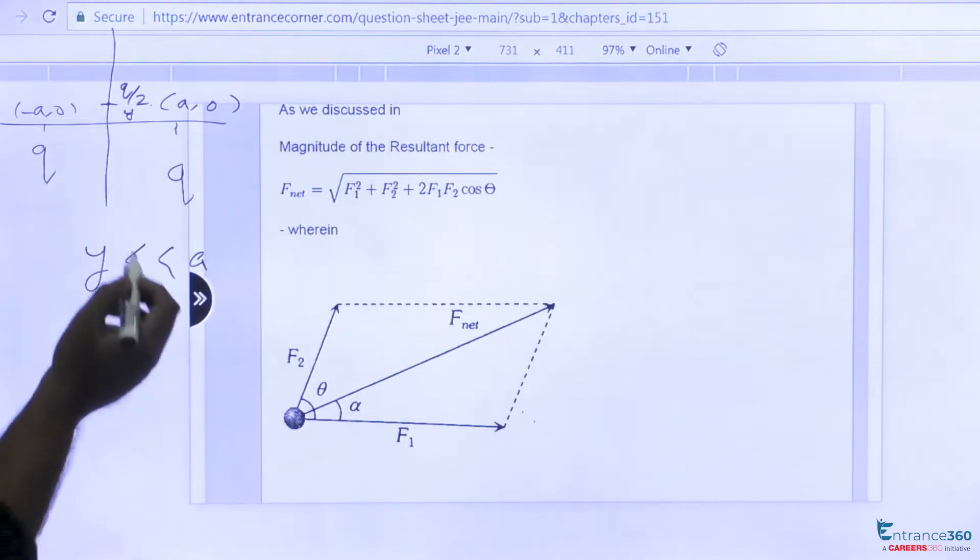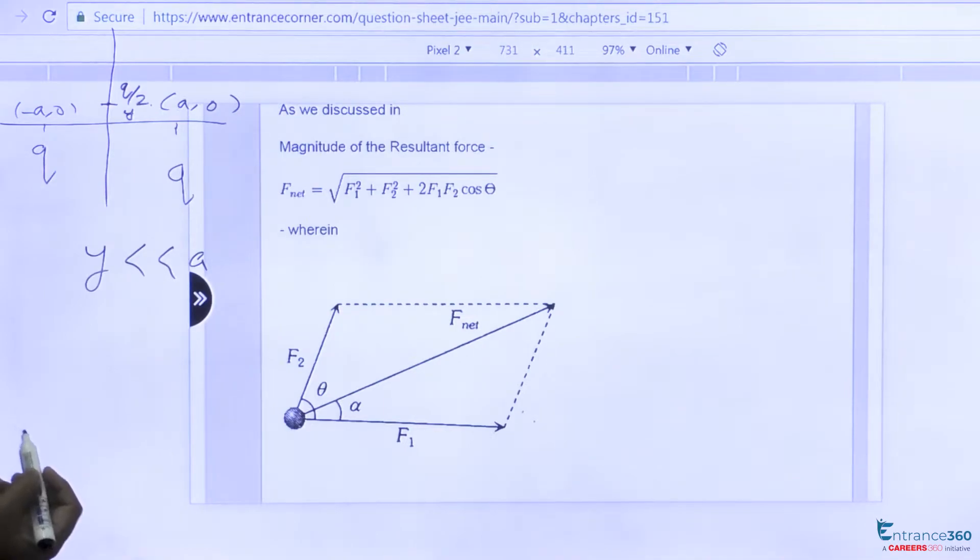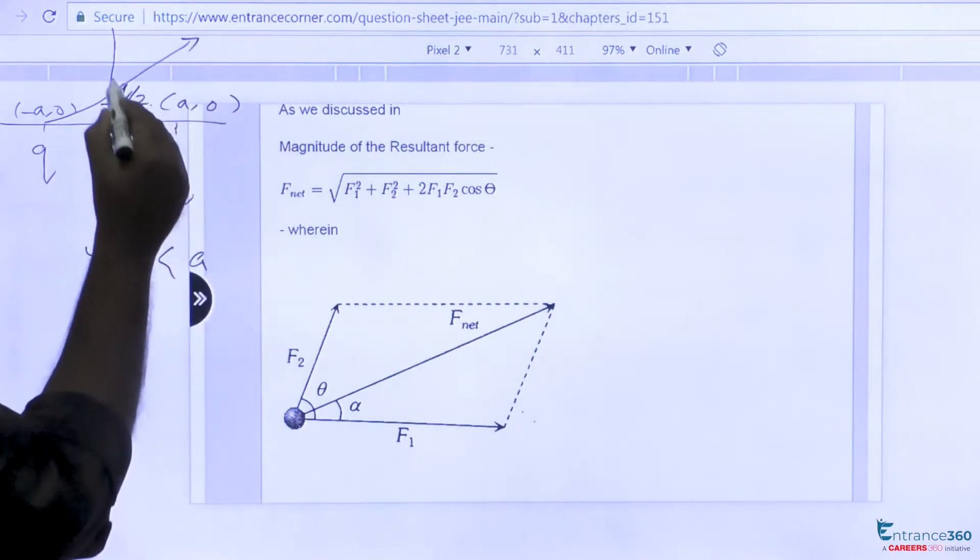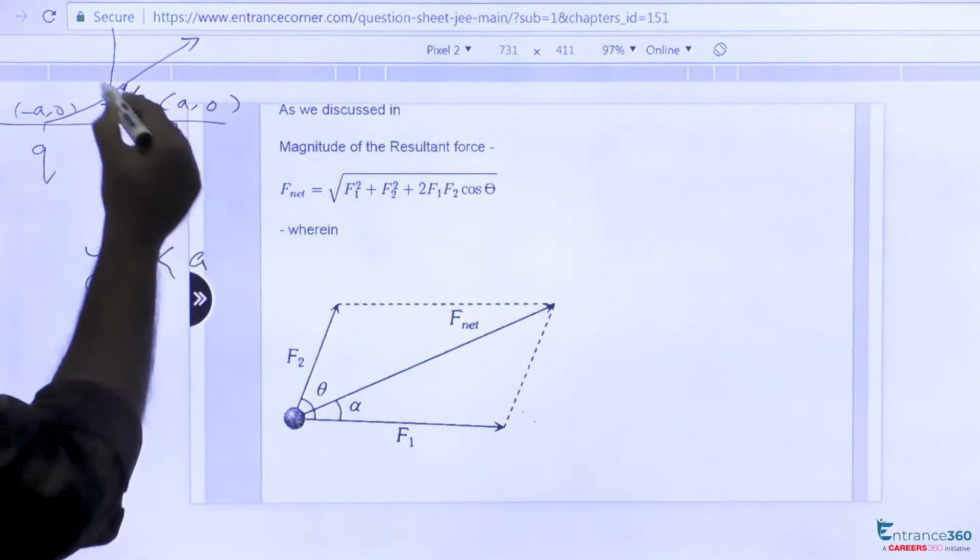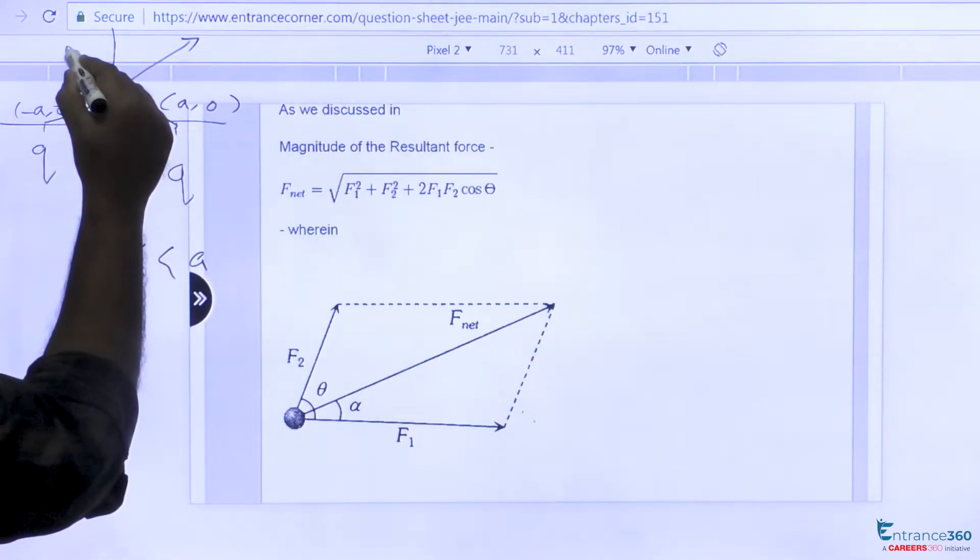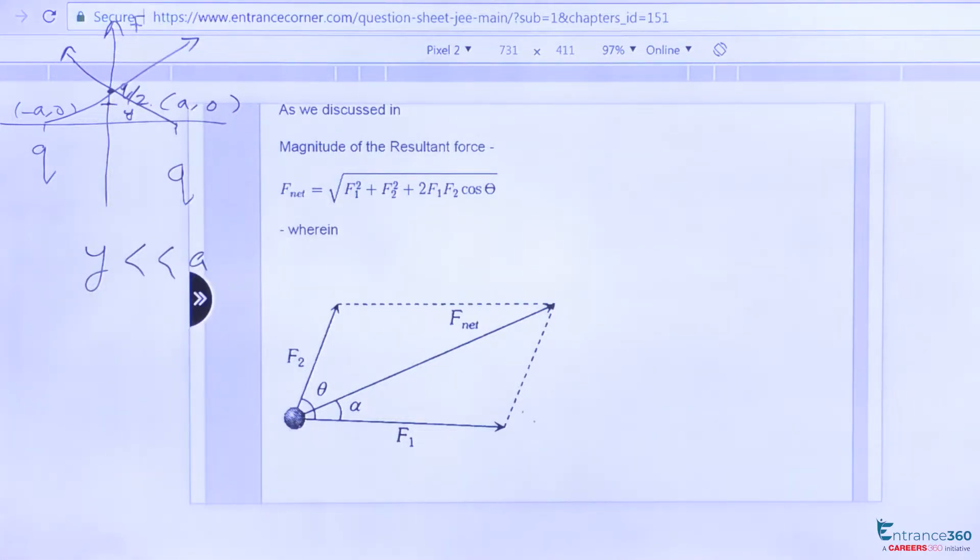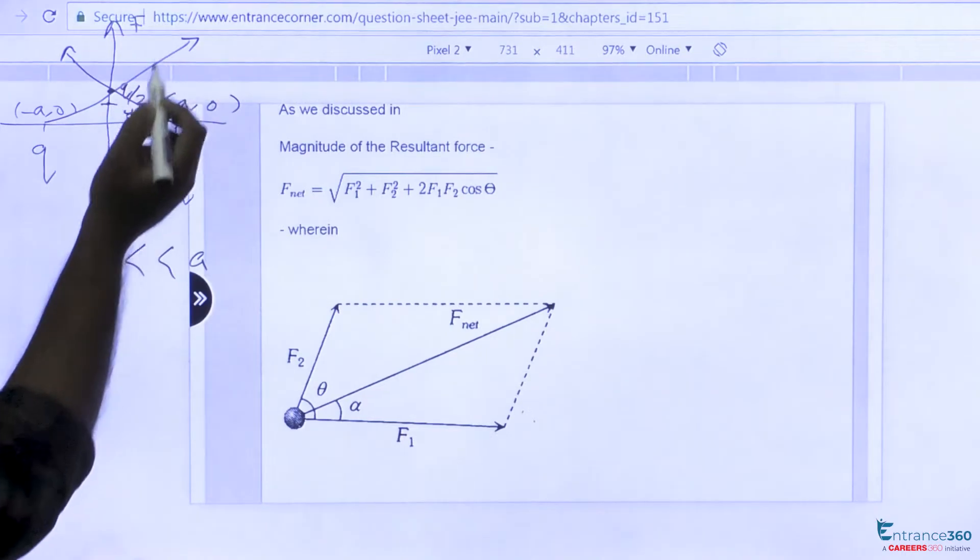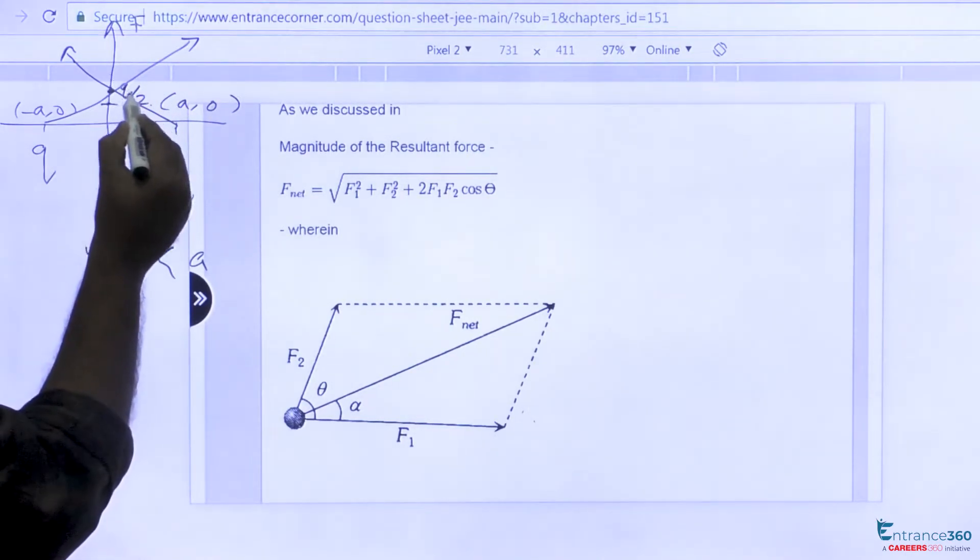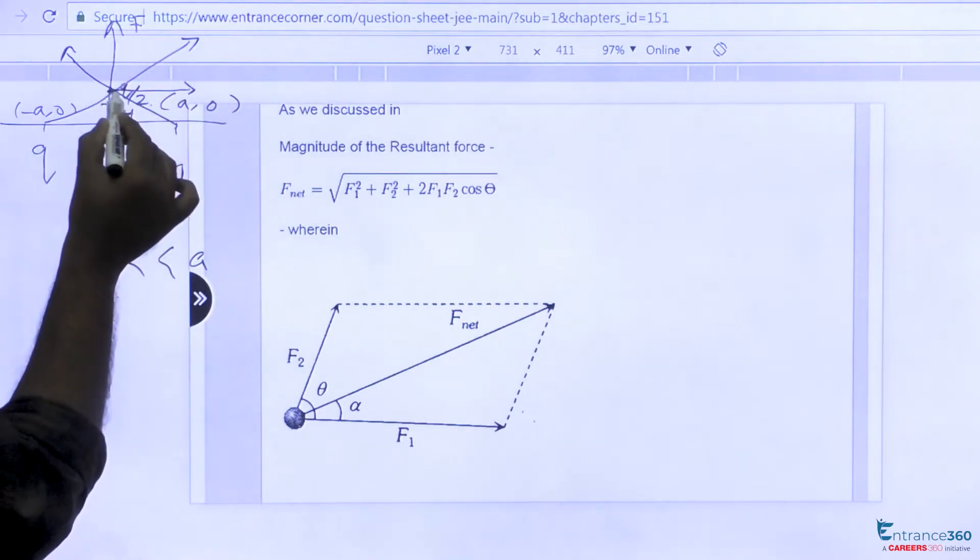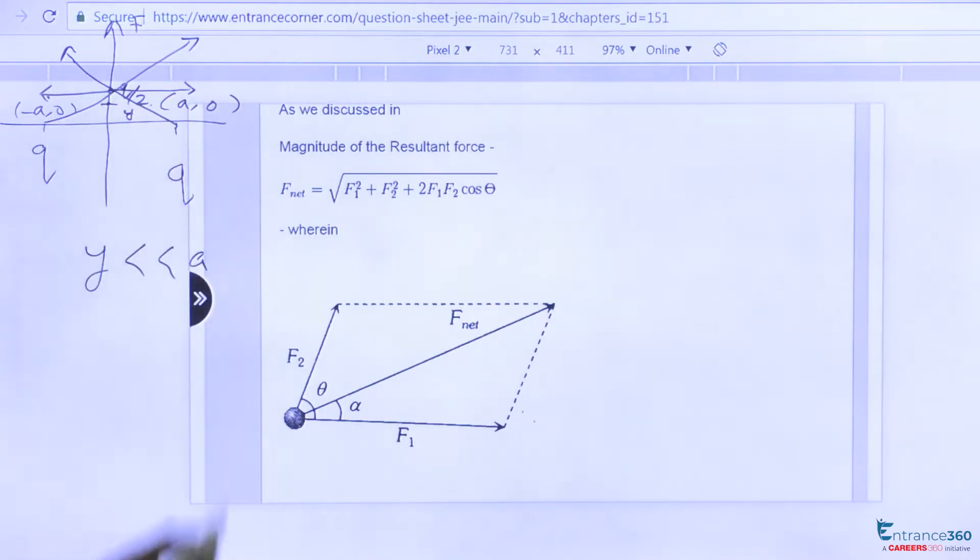Now let's see the force acting on q/2. We have one force and another force acted upon here. If the net force is F and the angle is theta, we can split the resultant into F cos theta and F sin theta. The horizontal components get cancelled and the vertical components add up.